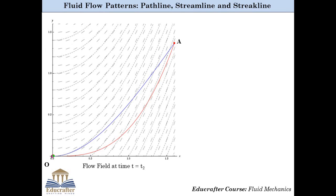One can observe that the streamline patterns are different at two different instants of time because the flow is unsteady. This is the flow field at another instant of time t equal to t2. A red particle that was at point O at time t0 has currently moved to point A following the red path, and hence this red line is known as the pathline corresponding to the red particle.